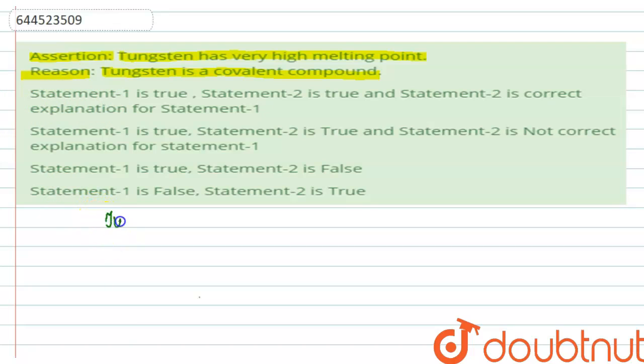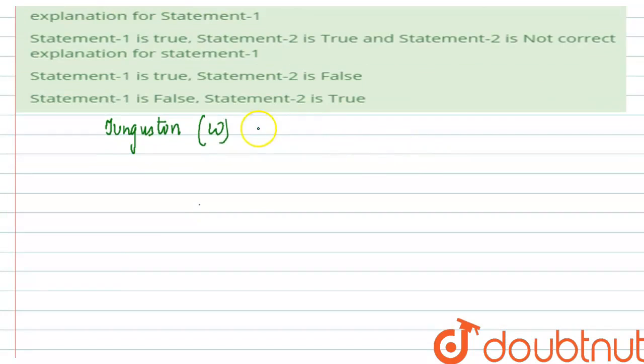Now, tungsten, among all the other elements in its own family, has a very high melting point. The reason is that it has a large number of valence electrons.